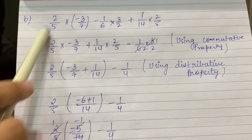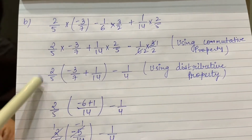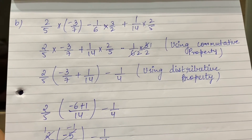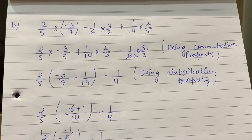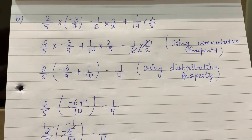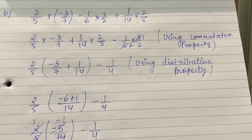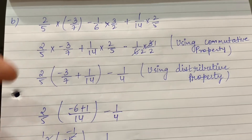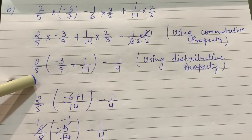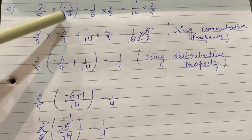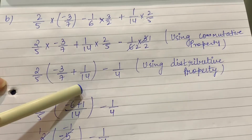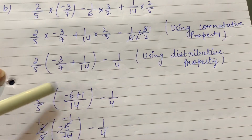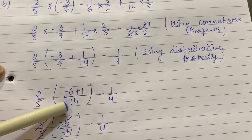In these two terms, 2 upon 5 is common. So we write 2 upon 5 on the common side — that is distributive property. We write 2 upon 5 as common, taking the multiples inside the bracket — that is called distributive property. We used distributive property, took 2 upon 5 as common. Minus 3 upon 7 plus 1 upon 14 goes inside. And minus 1 upon 4 remains. Now LCM of 7 and 14 is 14.